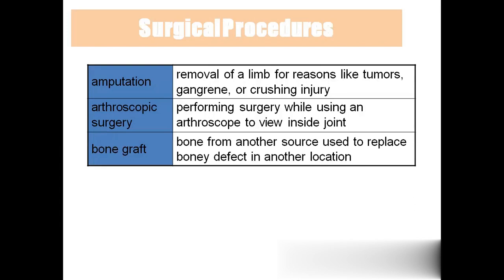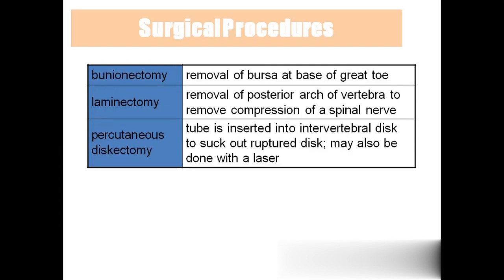Amputation is the surgical removal of a limb due to tumor, gangrene, or crushing injury. Arthroscopic surgery uses the arthroscope instrument to perform surgery inside a joint. Bone graft uses bone from another source to replace a bony defect. Bunionectomy is surgical removal of the bursa of the great toe. Laminectomy is surgical removal of part of a vertebra to relieve pressure on the spinal cord and spinal nerve. Percutaneous discectomy is performed for herniated nucleus pulposus — the ruptured disc is removed through the skin using a laser, making it a minimally invasive surgery.